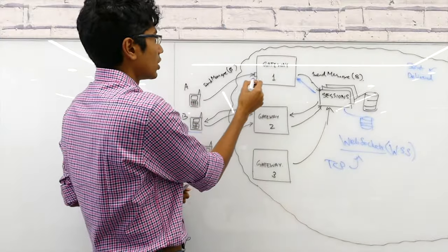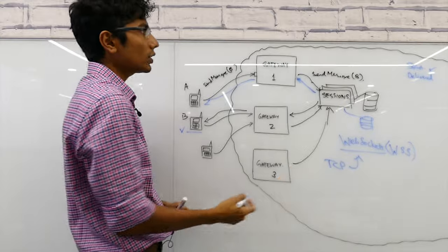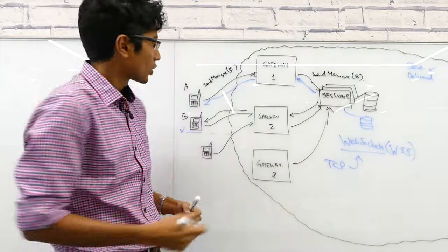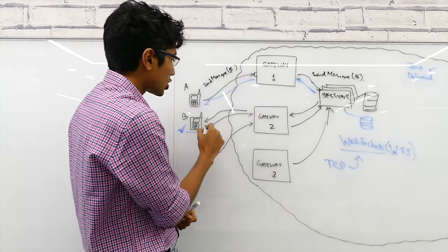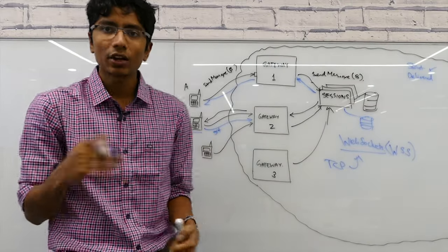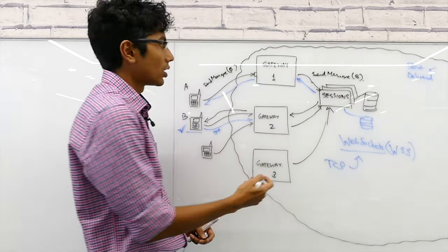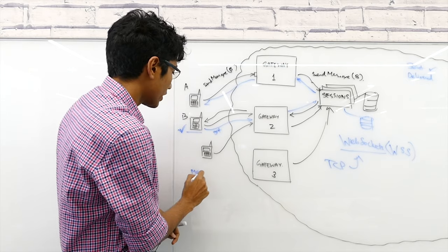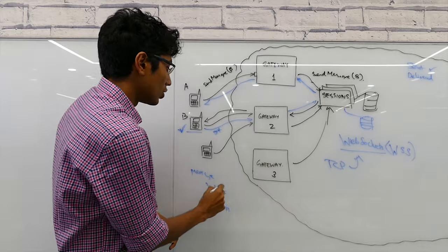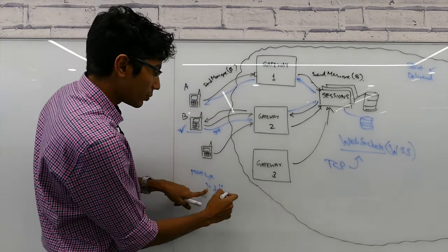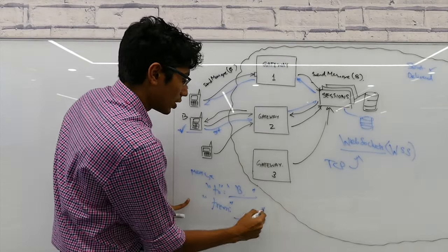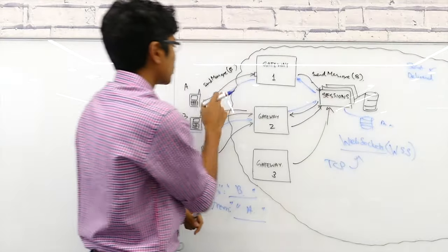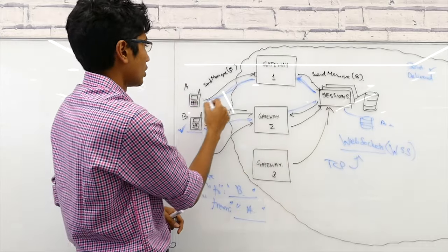Gateway one sends a sent acknowledgement to user A. When this entire flow completes and B gets the message for the first time, B should respond — it sends an acknowledgement back to gateway two saying it got the message. Gateway two then sends this to the session service, noting the message was received. Since the message has a 'to' and 'from' field, sessions can find out where A is — box one — and send a delivery receipt back to A.